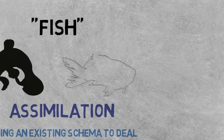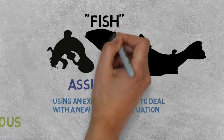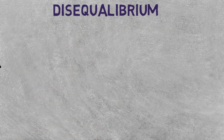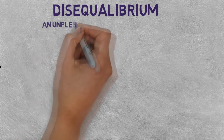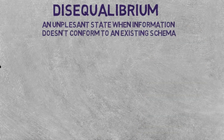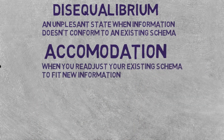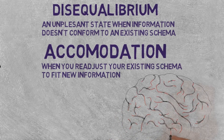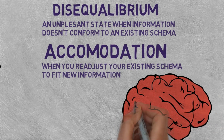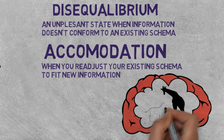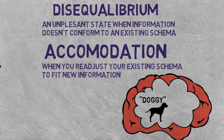However, sometimes a new situation or object won't work with an existing schemata. This is where equilibration comes in. Piaget suggests that an unpleasant state of disequilibrium occurs when new information doesn't fit with an old schemata. Usually, to reach equilibrium, you'll readjust your schema to something new—this is accommodation. So a child may call a giraffe 'doggy' because they both have four legs, but eventually she will learn to create separate schemata for both giraffes and dogs.